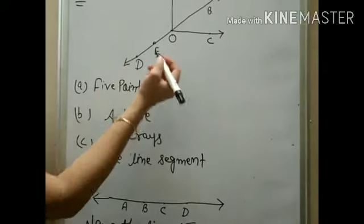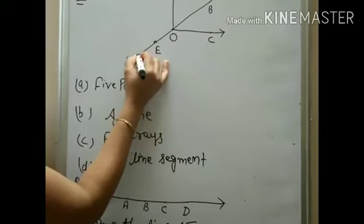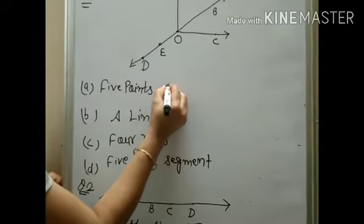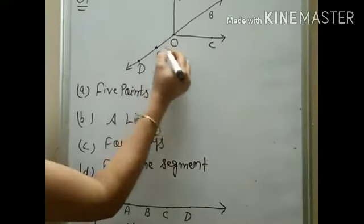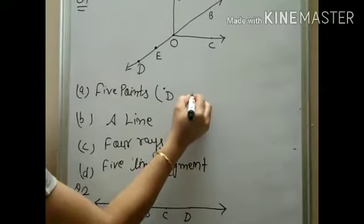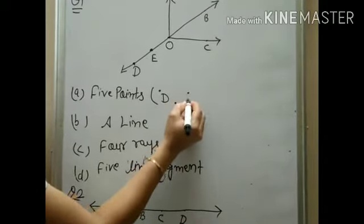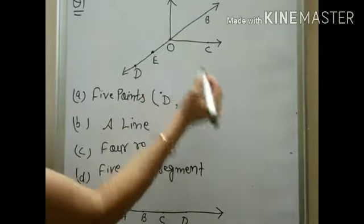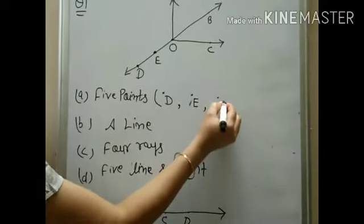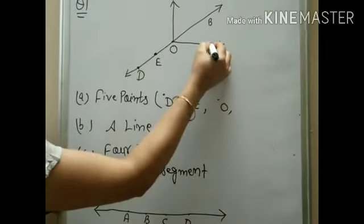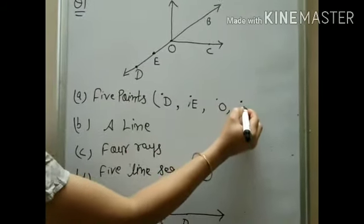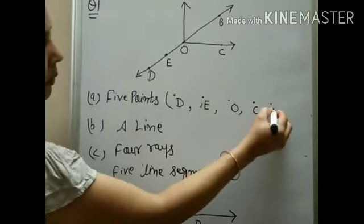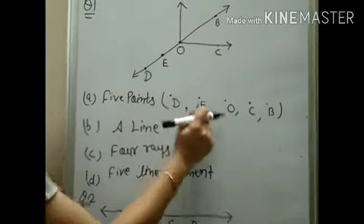First, tell me how many points are here. This is a point, this is a point, this is a point — you have to mention the point and write its name. The second point is given, first mention the point and then write the name. Next, O is the point — then mention the point, this is O. Next, C is given, this is C, another point. Then B is given, this is B. Check: 1, 2, 3, 4, 5 — five points found.